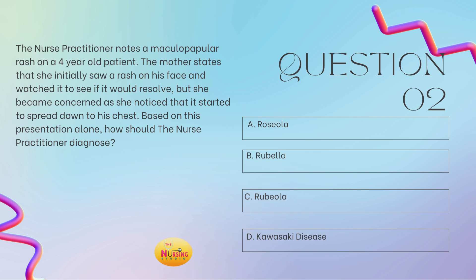Question number two: The nurse practitioner notes a maculopapular rash on a four-year-old patient. The mother states that she initially saw a rash on his face and watched to see if it would resolve, but she became concerned as she noticed that it started to spread down to his chest. Based on this presentation alone, how should the nurse practitioner diagnose? Is it A, roseola? B, rubella? C, rubella? Or D, Kawasaki disease?